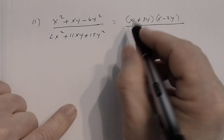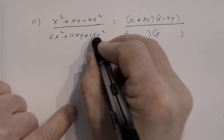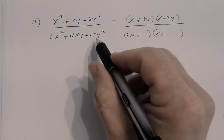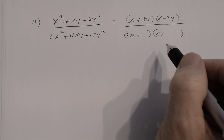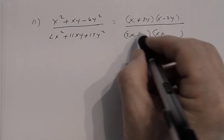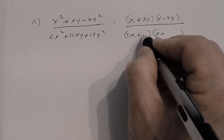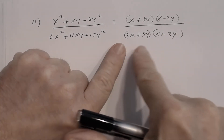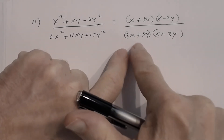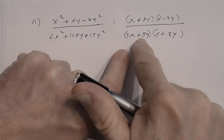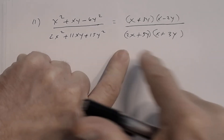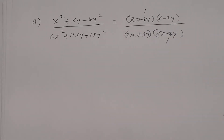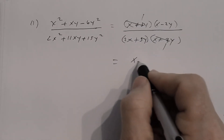Factor the denominator: 2x and x, last sign is positive so both positive; try 5y and 3y. Check: 2x·x = 2x², 5y·3y = 15y², outer 6xy + inner 5xy = 11xy. ✓ Denominator: (2x + 5y)(x + 3y). Now reduce: (x + 3y) is common to both, so it divides out. The answer is (x − 2y) divided by (2x + 5y).